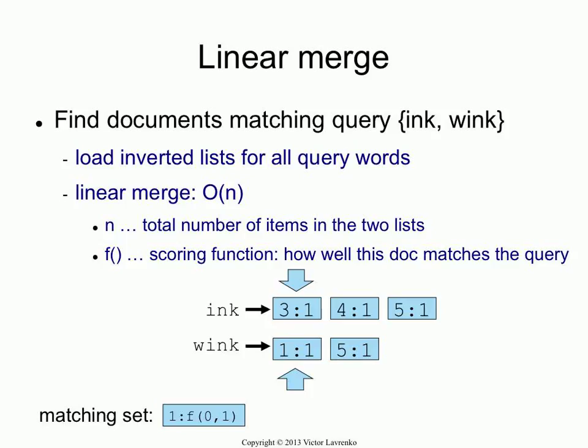How do I know it didn't contain 'ink'? Because the first entry under the pointer right now is three, and this list was sorted to begin with, so I know it doesn't have document number one — if it did, it'd be under the pointer. So I call the scoring function: document one had 'wink' but not 'ink'. Then you increment the smaller pointer and repeat. Now ink points to document three, wink to document five — not equal — so I call the scoring function: document three had 'ink' with count one, 'wink' with count zero. Increment the smaller pointer again.